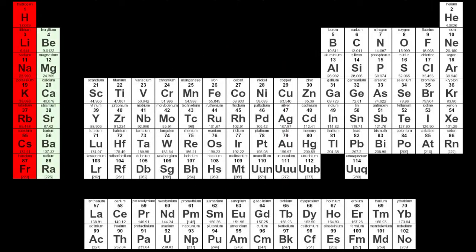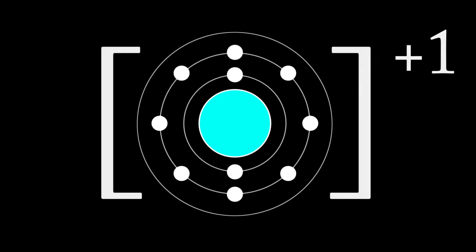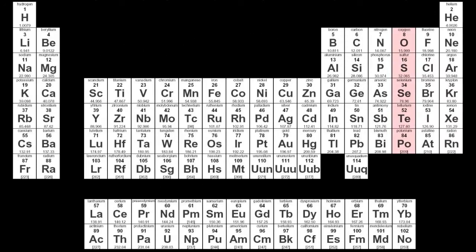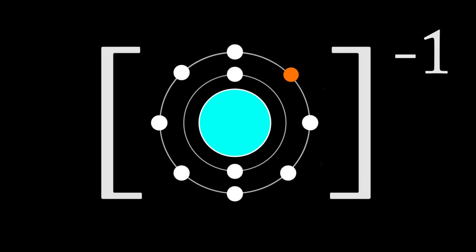Group 1 and 2 elements will lose or donate electrons. This creates an ion with a positive charge known as a cation. Similarly, group 6 and 7 elements will gain or accept an electron and so create an ion with a negative charge known as an anion.